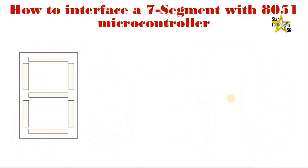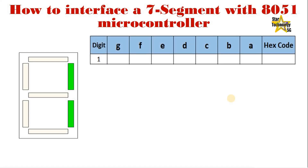How to display a number on a 7-segment display. If we want to display digit 1, we need to turn on segments B and C, and turn off all other segments. For example, if we are using the Common Anode type display, we need logic 0 to turn on segment B and segment C, and logic 1 to turn off all other segments. The hex code of the binary value is 79.